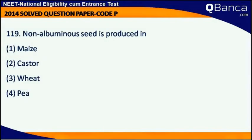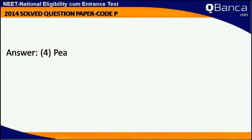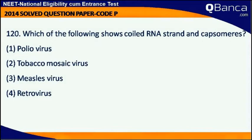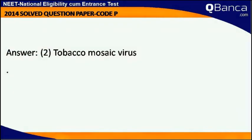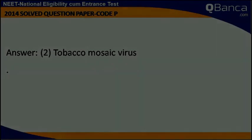Non-albuminous seed is produced in — Answer: P. Which of the following shows folded RNA strand and capsid? Answer: Tobacco Mosaic Virus (TMV).